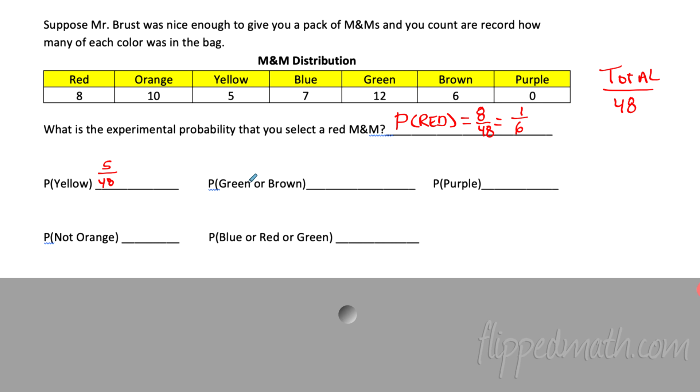What about the probability of green or brown? Well, green or brown. I can have one or the other. So these are all successes here. So I need to add them together. That is 18 successes out of, so this equals 18 out of the 48. Well, let's reduce that. So what do we get? Nine out of 24, three out of eight. Please check my work and make sure I'm okay with that. So three out of eight would be the probability of getting a green or brown.